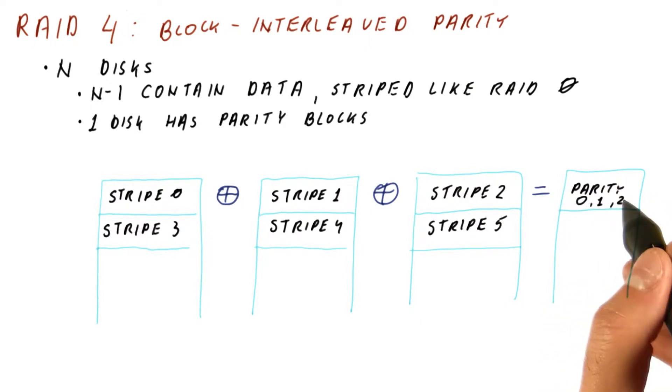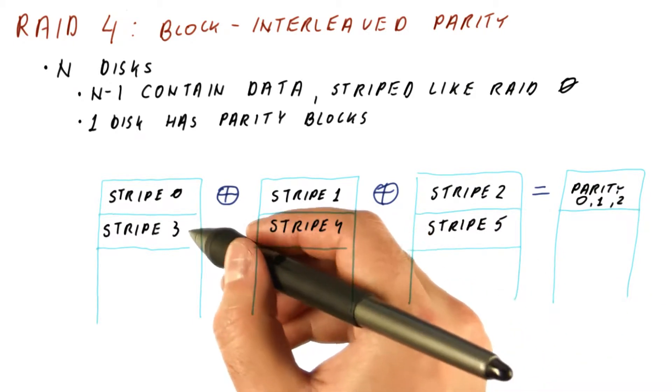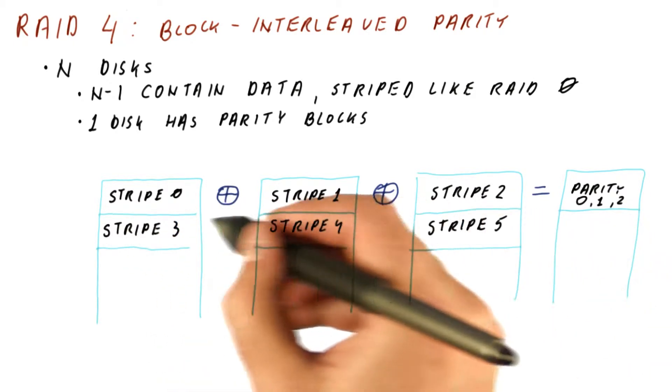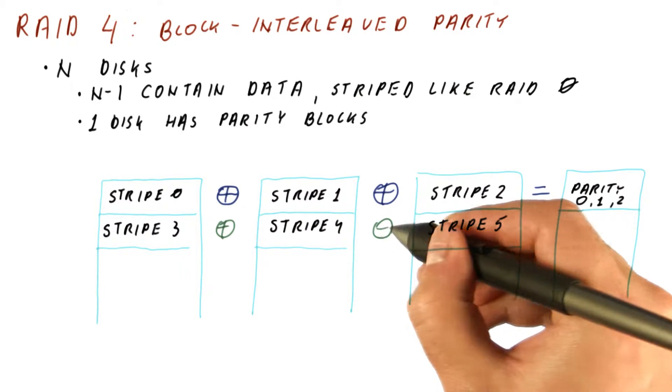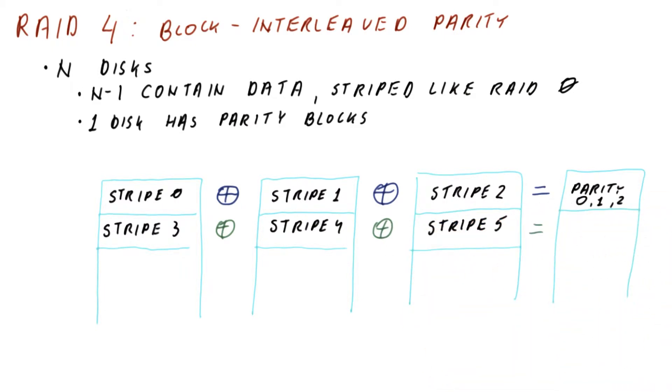And we put that on the fourth disk. Then we go to the next stripe on each disk, XOR them. And that gives us the parity stripe for these three stripes, and so on.